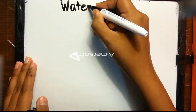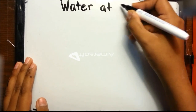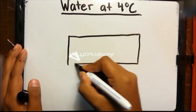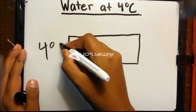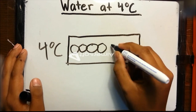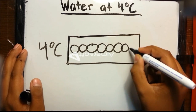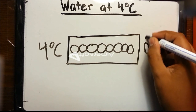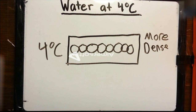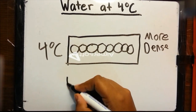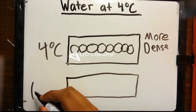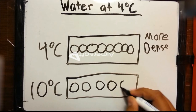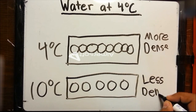Water at 4 degrees Celsius. When water is at 4 degrees Celsius, the water molecules are as close as they can be, making water at 4 degrees Celsius the most dense water can be. Now, if the water was at 10 degrees Celsius, the water molecules would be more spread apart, making it less dense.